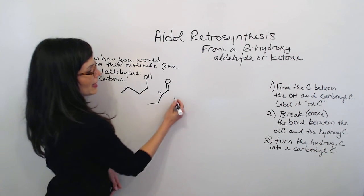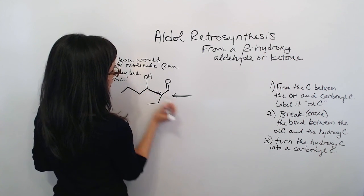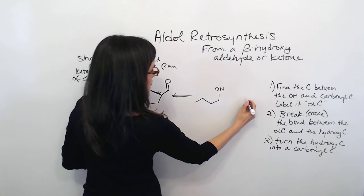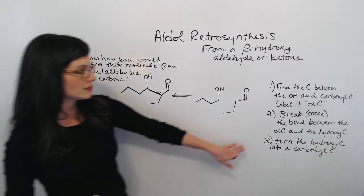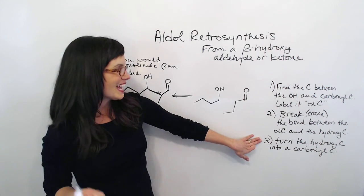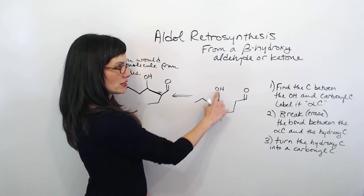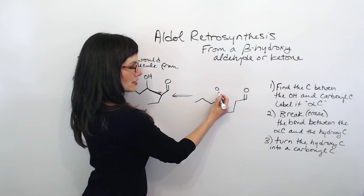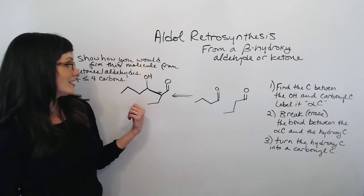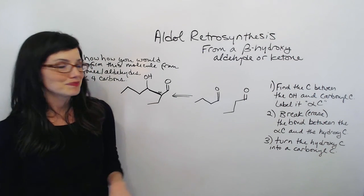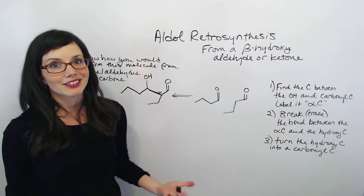For you, that might mean doing true retrosynthesis and actually redrawing them. Then our next step is to magically turn that hydroxy carbon into a carbonyl carbon — so it's not a hydroxy carbon anymore, it's a carbonyl. Those are the two molecules that created our beta-hydroxy ketone or aldehyde. And they're both the same molecule, which is pretty typical for a standard aldol addition.